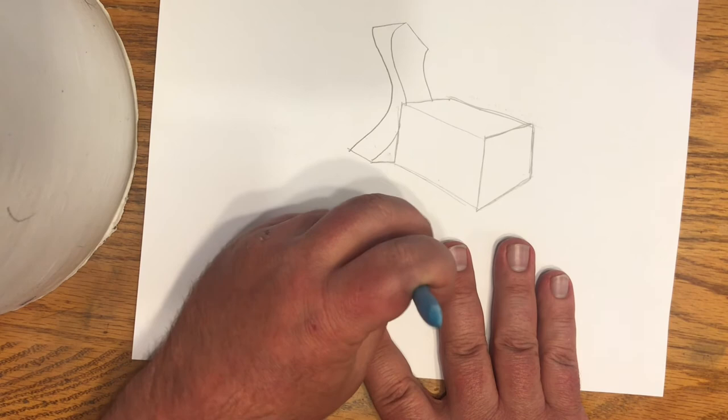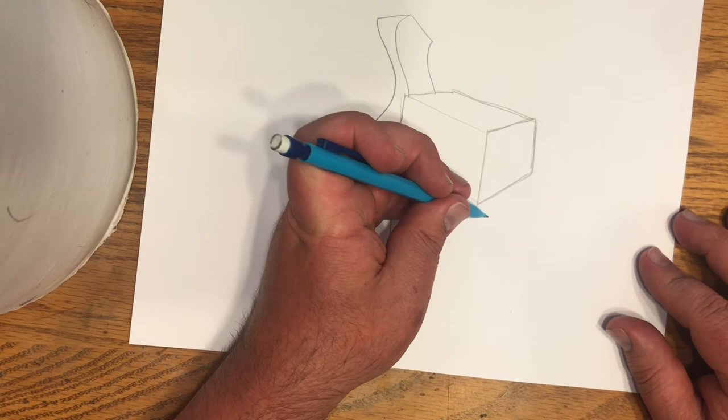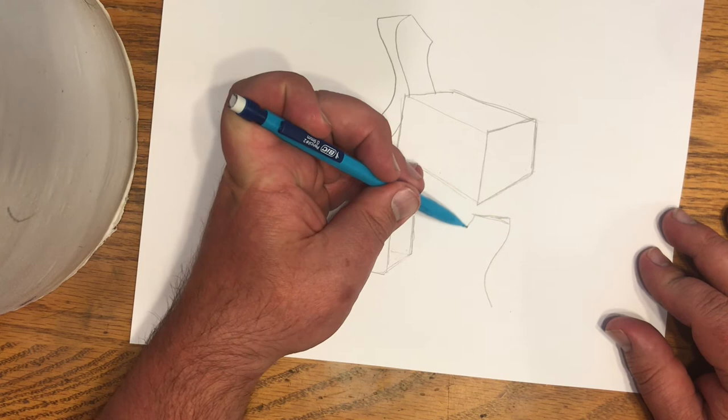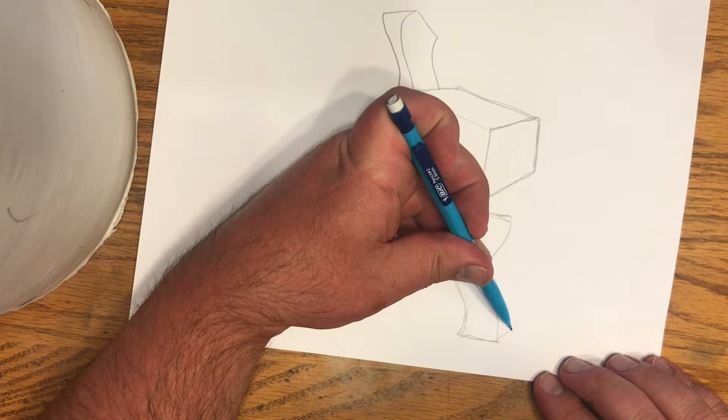So what I'm doing here, instead of a square, I'm doing my curvature shape. And then I'm gonna draw this same shape back here, try to anyway.